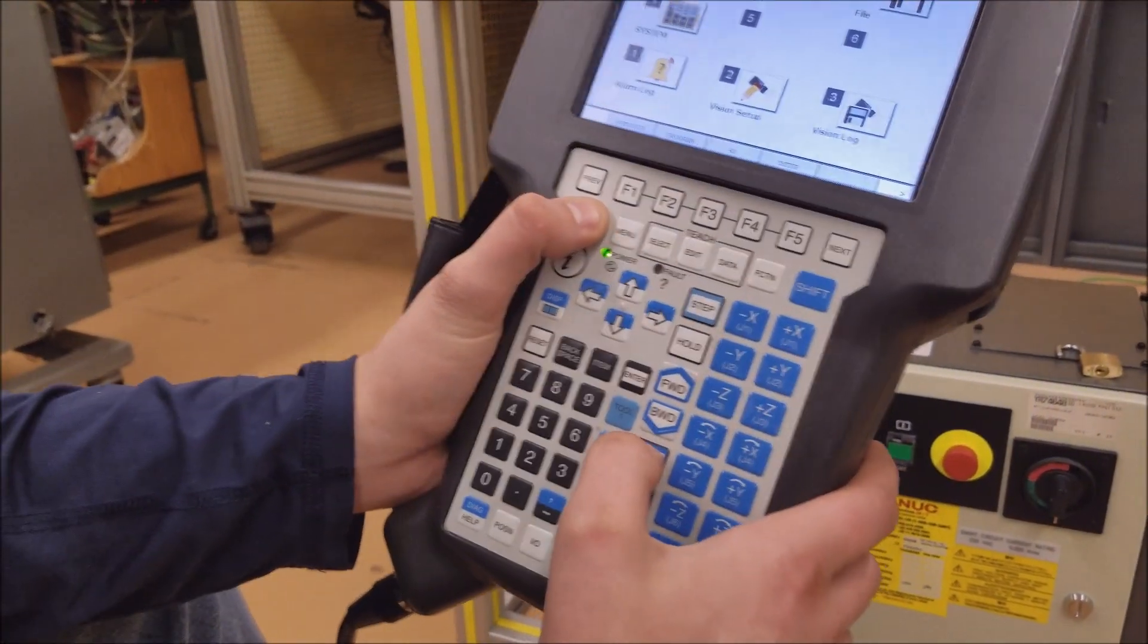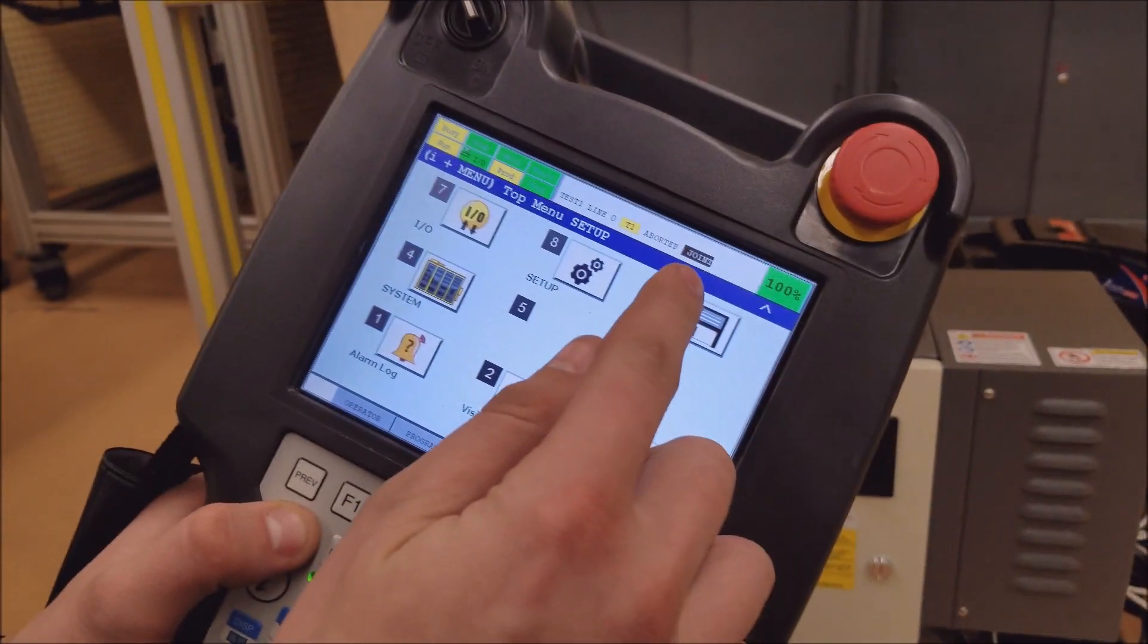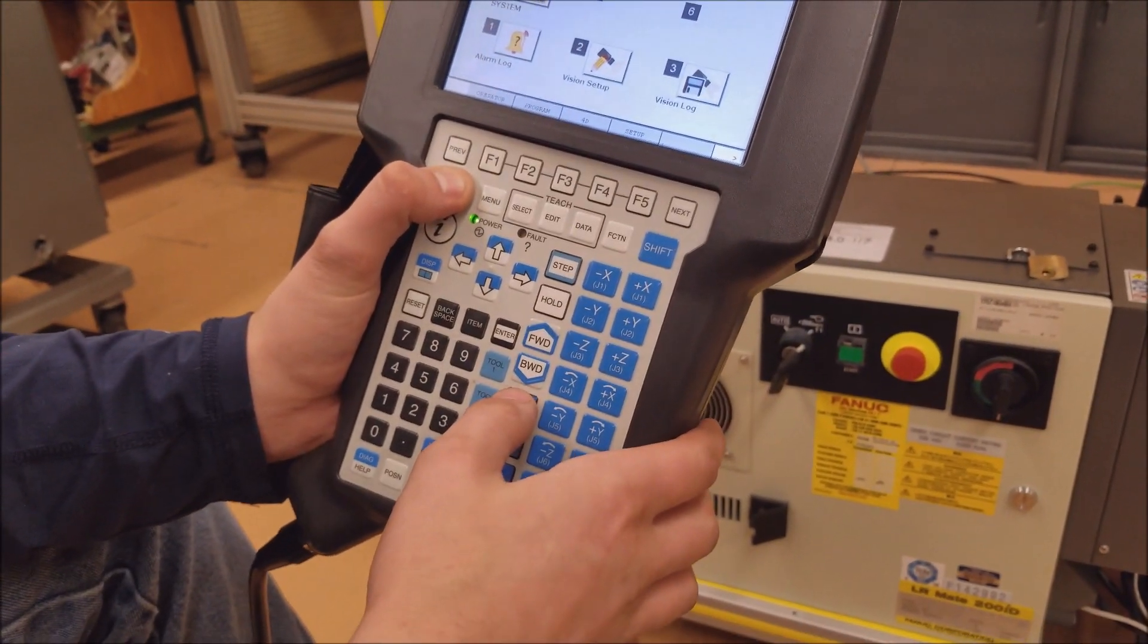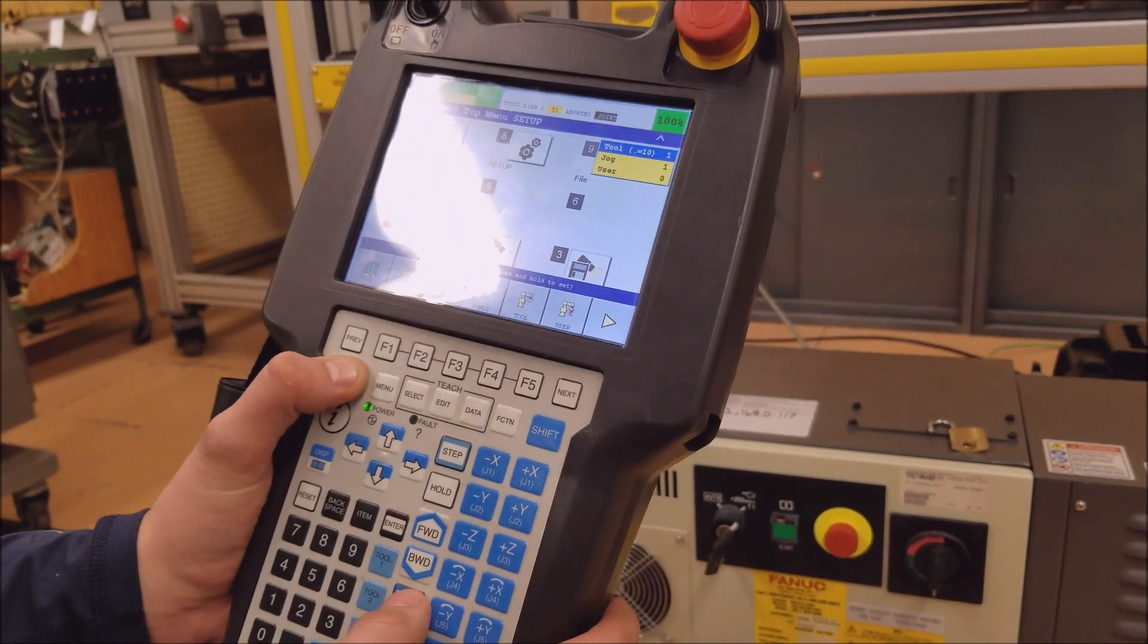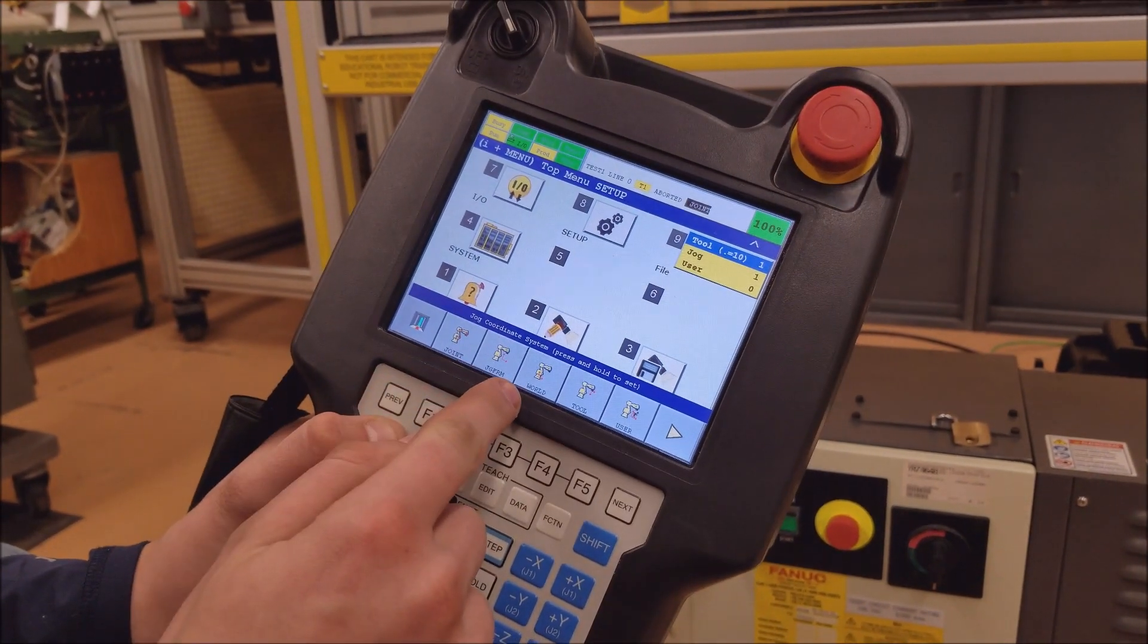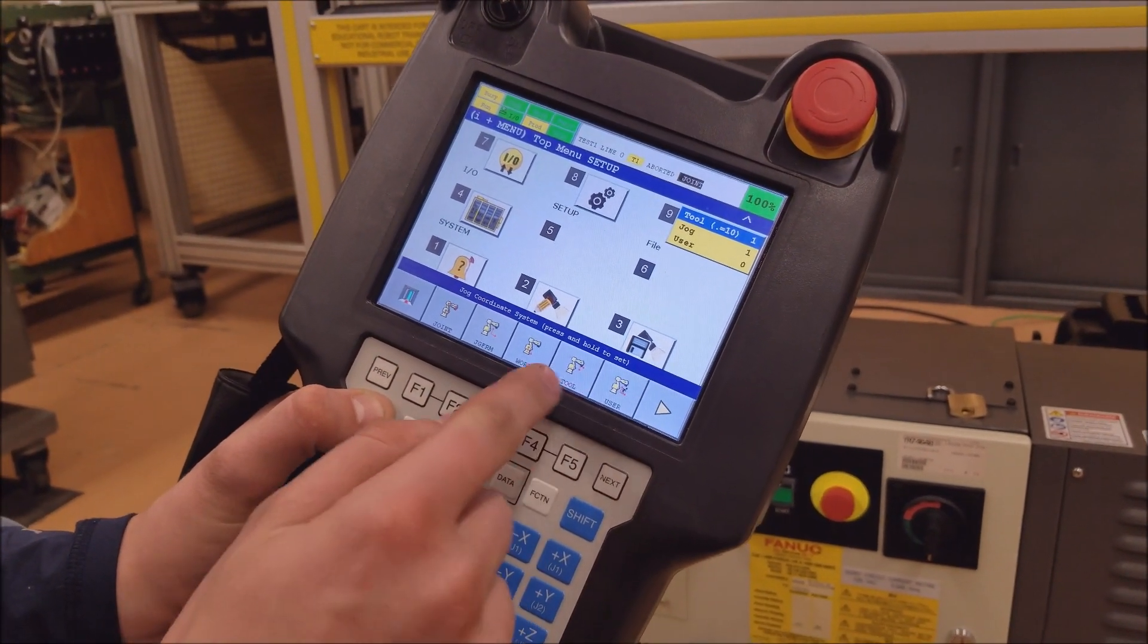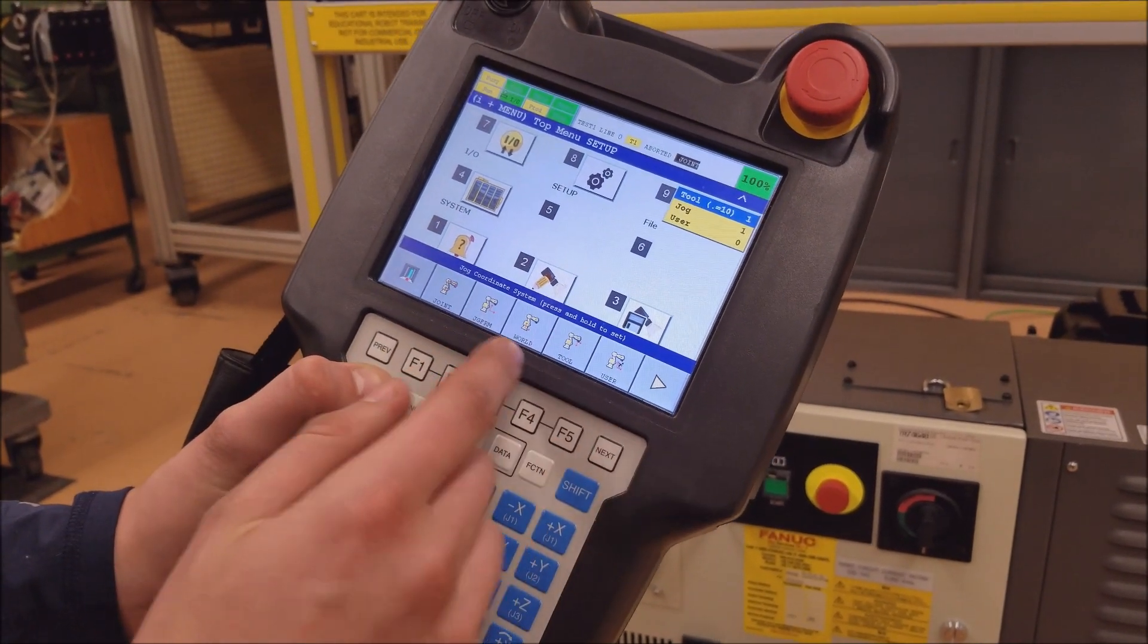And then the way you switch—right now we are in the joint mode—you would switch by hitting coordinate, and then you'll have your different modes pop up: your tool, world, joint, user.